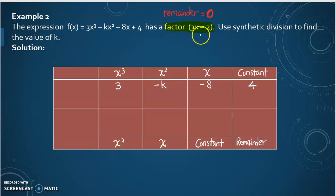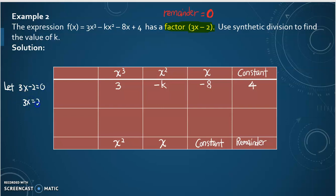Next, I will let 3x minus 2 equal to 0. So 3x is equal to 2, and x is equal to 2 over 3. I will substitute this value into the divisor column, so here is 2 over 3.